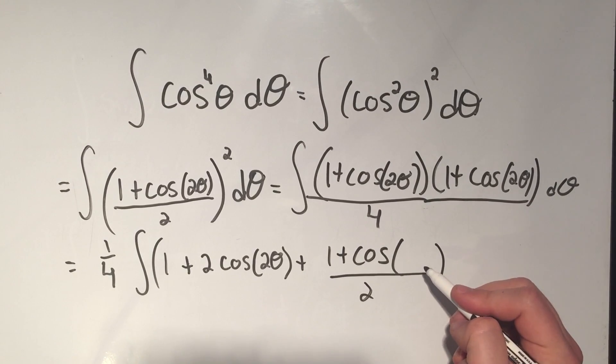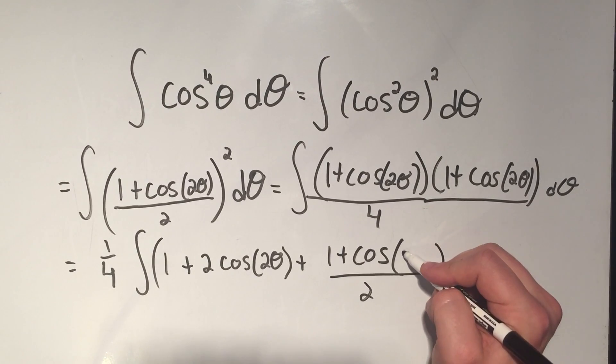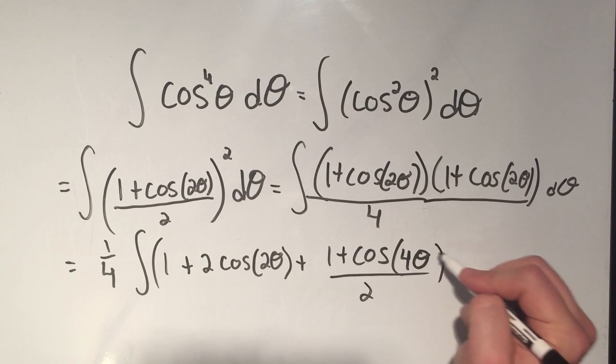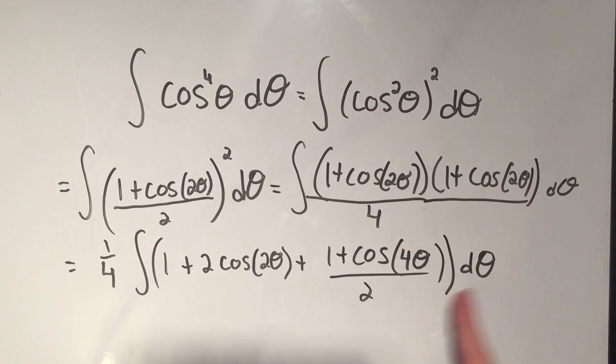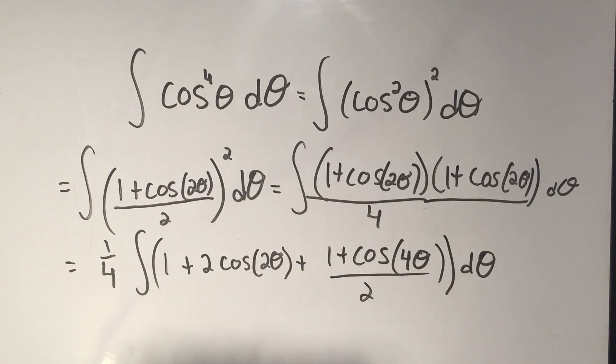But remember, we already had a 2 theta. And if that's the half angle formula, I need to double that to 4 theta. So if you missed that little trick, rewind the video a couple seconds and you can see what I did there.